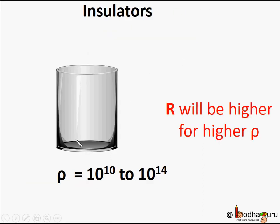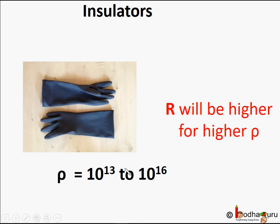Insulators are materials which have very high resistivity; that is, they offer maximum resistance to current flow and do not allow electric current to pass. Glass has a resistivity of 10¹⁰ to 10¹⁴ ohm meter, and hence does not conduct electricity. Similarly, rubber has a resistivity of 10¹³ to 10¹⁶ ohm meter, so it does not conduct electricity and is used as a coating on electric wires and in gloves used by electricians, so that current does not pass through them.